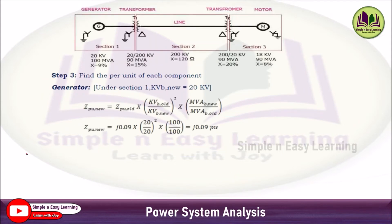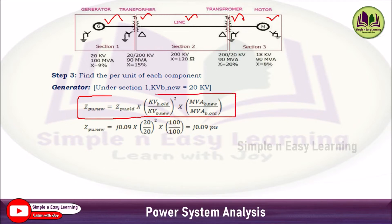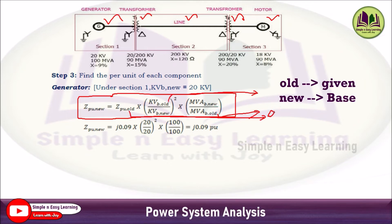Step 3: find the per unit value of all components — generator, transformer T1, transmission line, transformer T2, and motor. The formula for the new per unit impedance is: Z_pu(new) = Z_pu(old) × (KVB_old / KVB_new)² × (MVAB_new / MVAB_old), where 'old' represents the given values and 'new' represents the chosen base values.